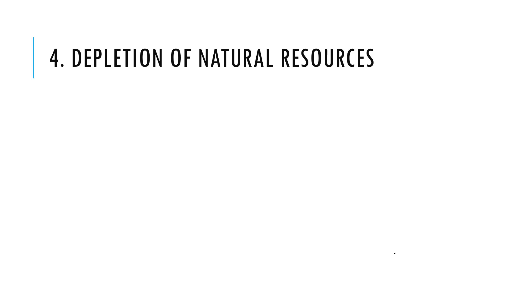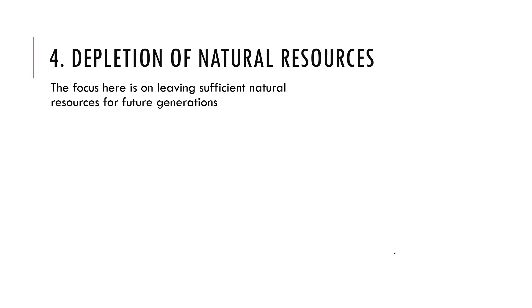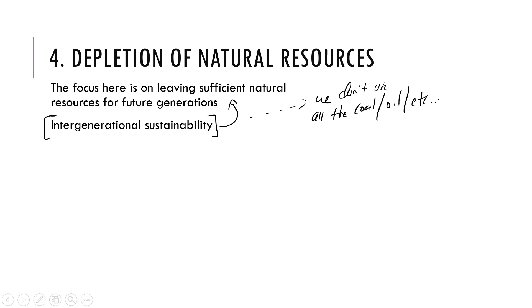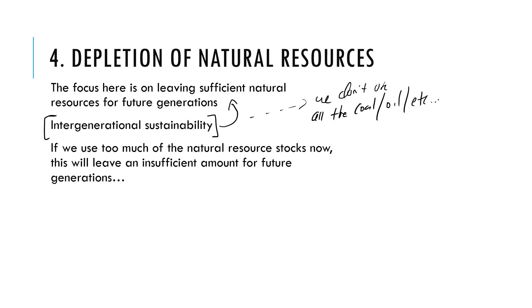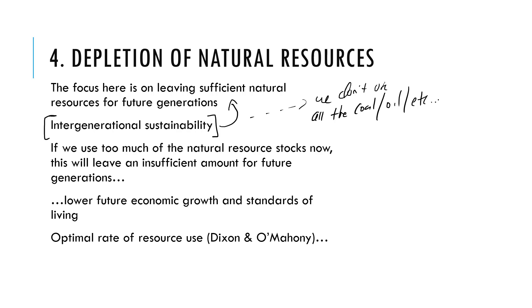The final environmental issue we're looking at in terms of the economy is the depletion of natural resources. The focus here is on Australia's ability to leave sufficient natural resources for future generations — this is the idea of intergenerational sustainability. Put simply, we don't use all the coal or oil; we leave some for future generations. If we use too much of the natural resource stocks now, there won't be enough for future generations, leading to lower future economic growth rates and lower standards of living.